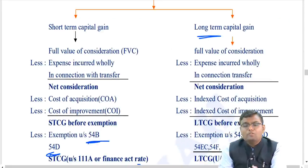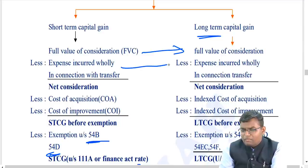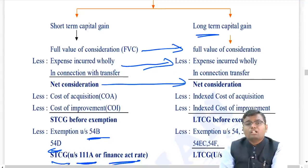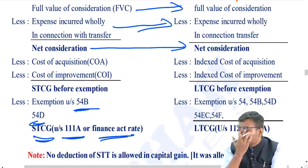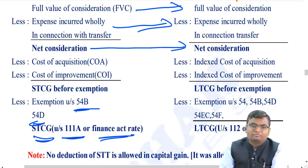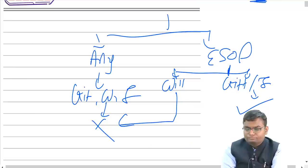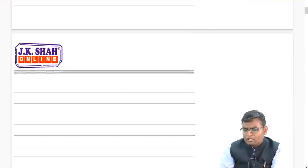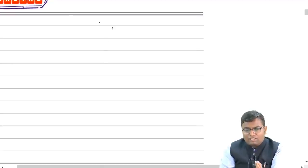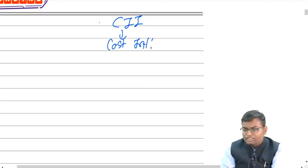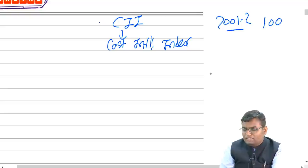For Long-Term Capital Gain (LTCG): Full value of consideration minus expenses in connection with transfer gives net consideration. Instead of actual cost of acquisition, you deduct the Indexed Cost of Acquisition. The Cost Inflation Index (CII) is assigned each year, with base year 2001-02 indexed at 100. For 2020-21, CII is 301.